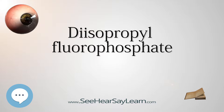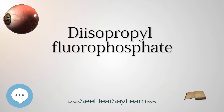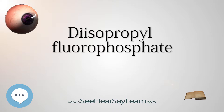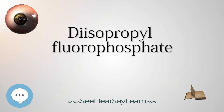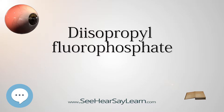Uses in Medicine: Diisopropyl fluorophosphate is a parasympathomimetic drug and irreversible anti-cholinesterase. It has been used in ophthalmology as a miotic agent in the treatment of chronic glaucoma, as a miotic in veterinary medicine, and as an experimental agent in neuroscience because of its acetylcholinesterase inhibitory properties and ability to induce delayed peripheral neuropathy.